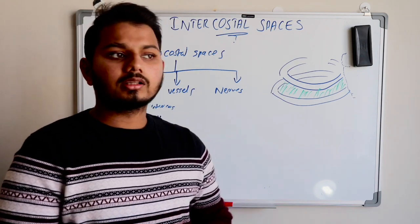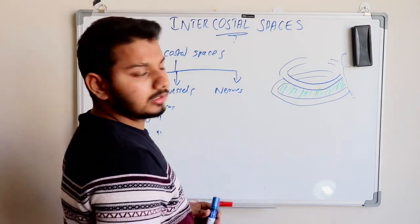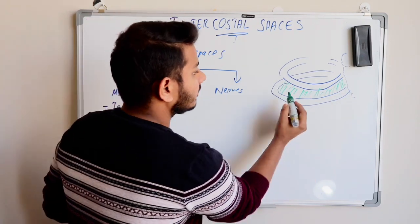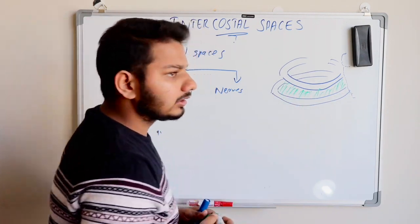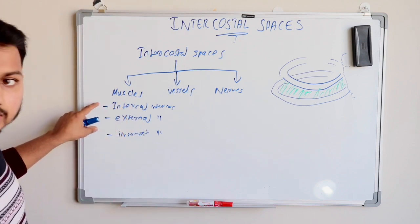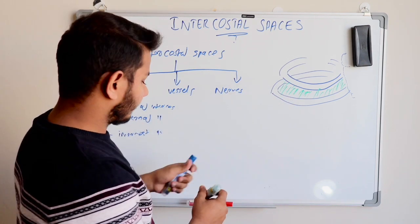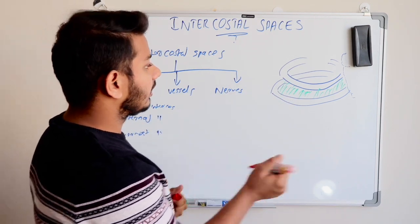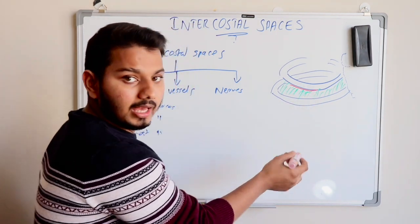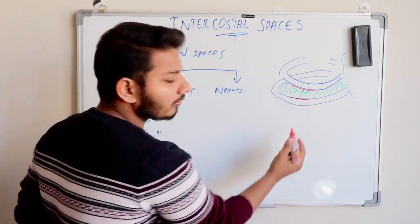Considering a rib and the sternum, these three muscles arise from the lower border of the upper rib and insert into the upper border of the lower rib.